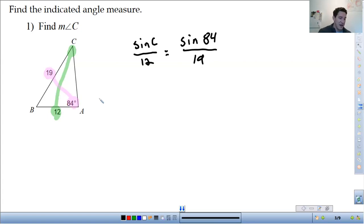So first thing I'm going to do is go ahead and evaluate the sine of 84 over 19. I'm just going to put that in a calculator. So sine of 84 and then divide it by 19. So this in a calculator, sine of 84 divided by 19 is 0.052. And then solve, I'm going to multiply both sides by 12. So 0.052 times 12, you get 0.628.